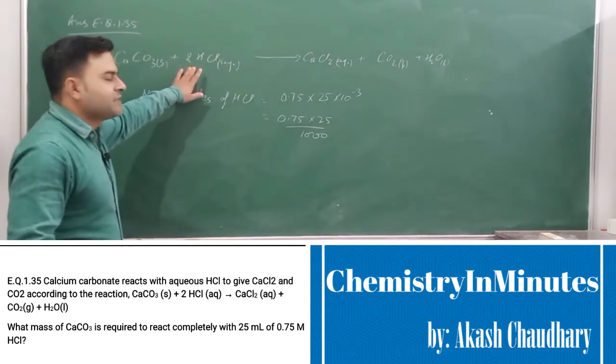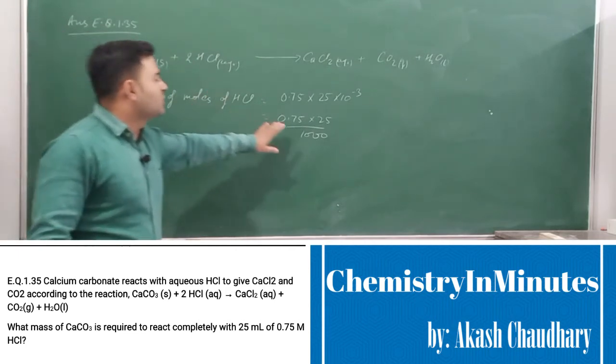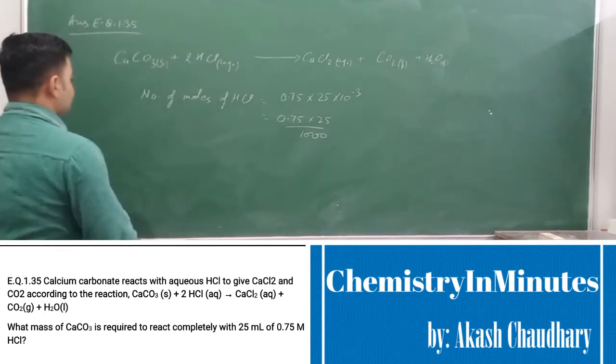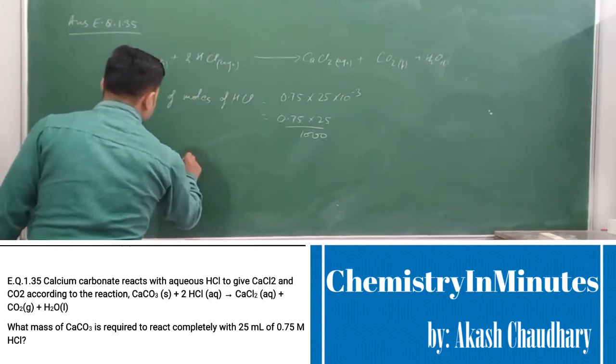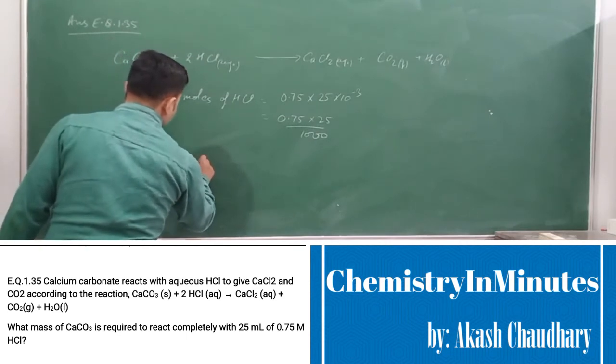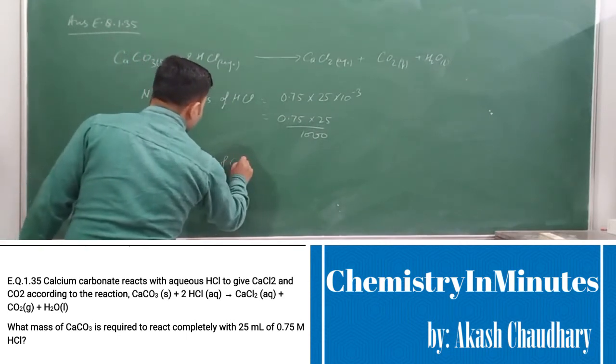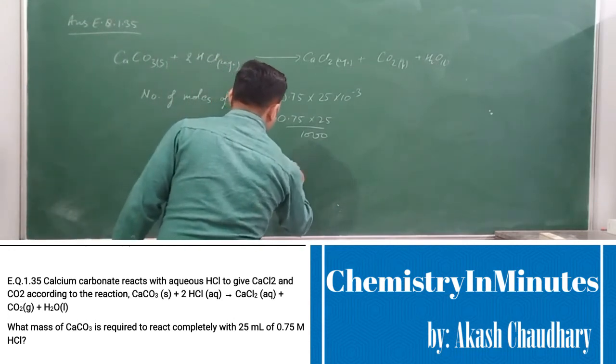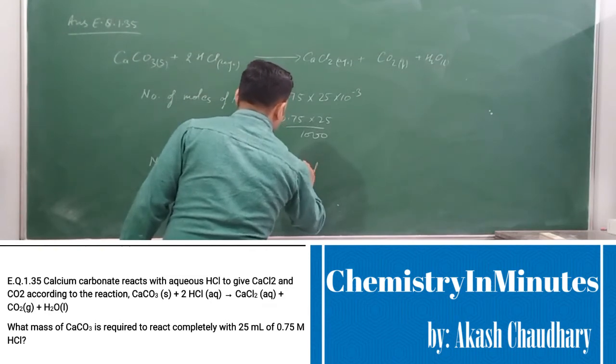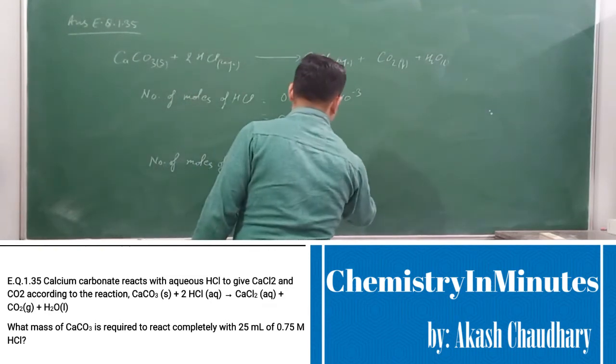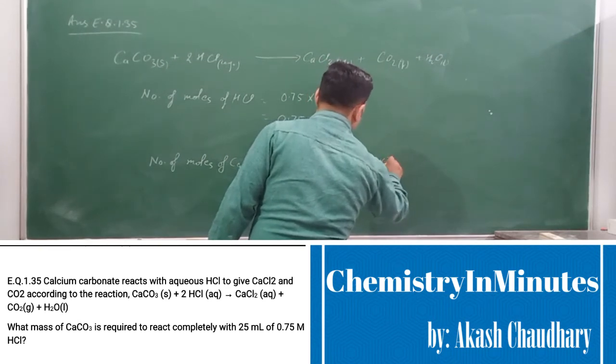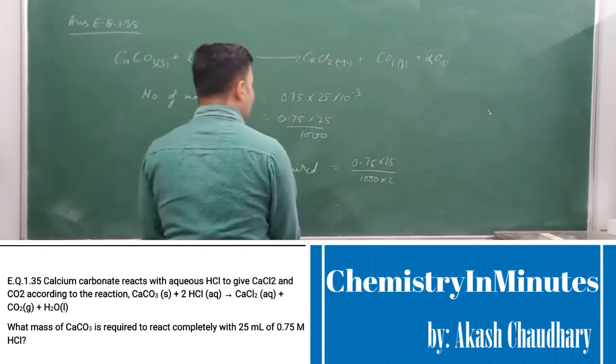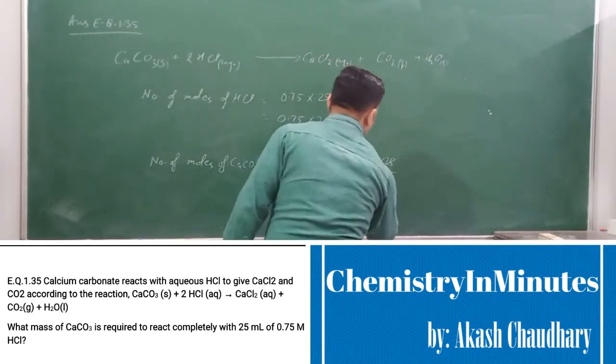Now 2 moles of HCl react with 1 mole of CaCO3. So this much HCl will react with half of this. So the number of moles of CaCO3 required will be 0.75 × 25 / (1000 × 2).